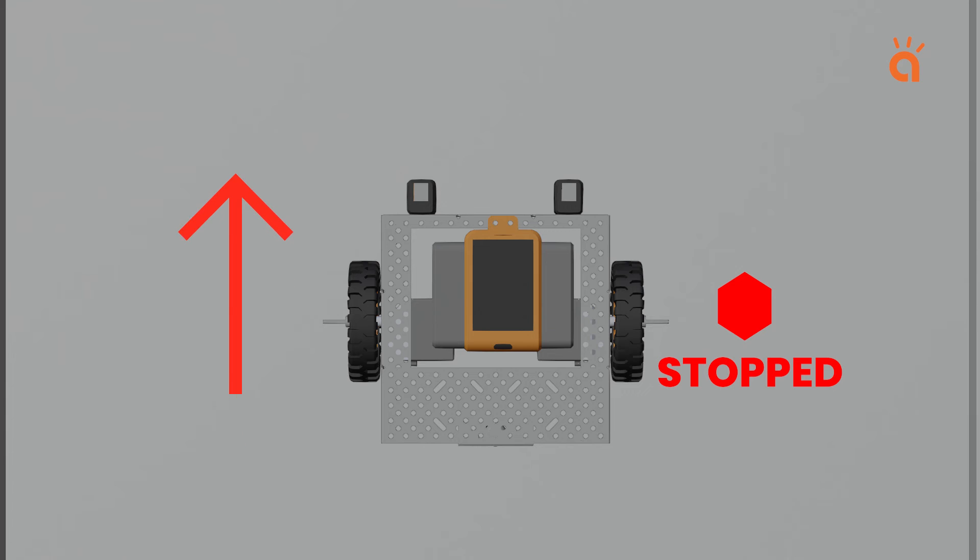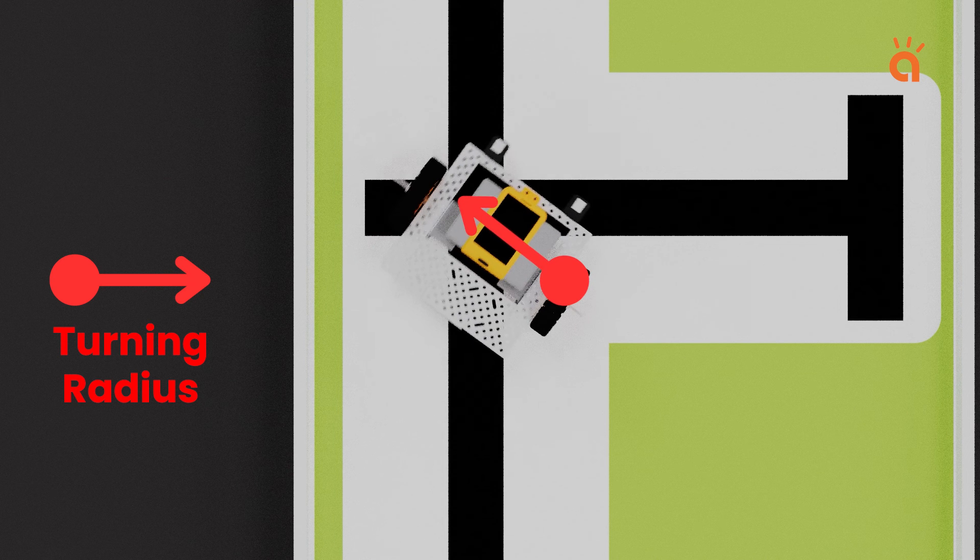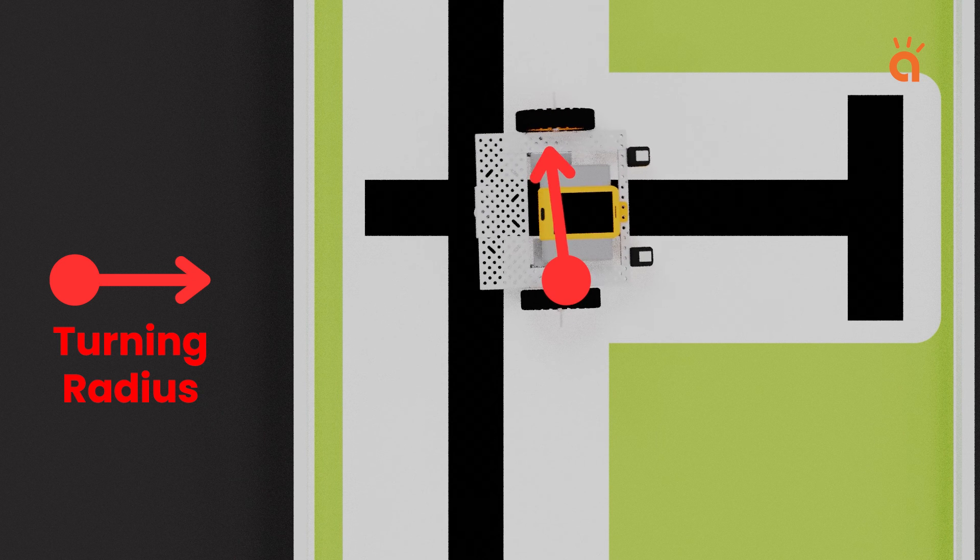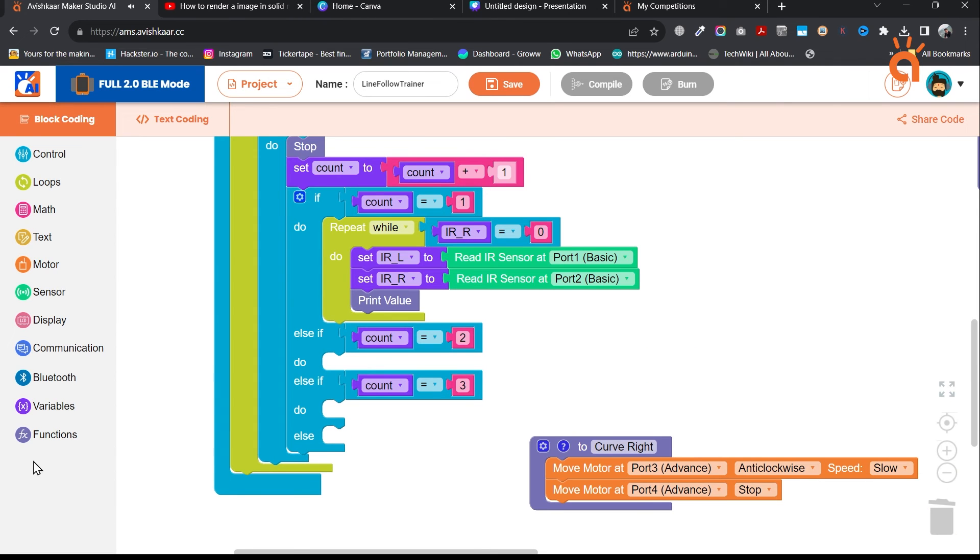Curve turn. In this method, we stop one wheel and keep on rotating the other, allowing the robot a bigger turning radius. Because the pivot point or the axis of rotation will get changed from center to its side. And as you can see, the robot is now taking perfect 90 degrees turn. So, we will use the curve turn method in our code.